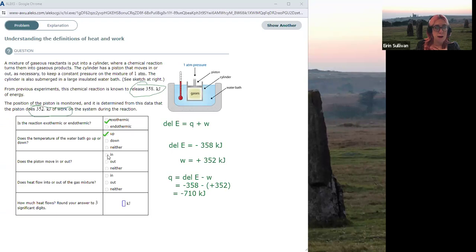Does the piston move in or out? Well, the piston is doing work on the gases. So the piston has to be moving in in order to be compressing the gases and doing work on them. Does heat flow into or out of the gas mixture? Minus Q means it's flowing out. And the magnitude of that heat flow is 710 kilojoules, because we've already defined that sign as being negative.